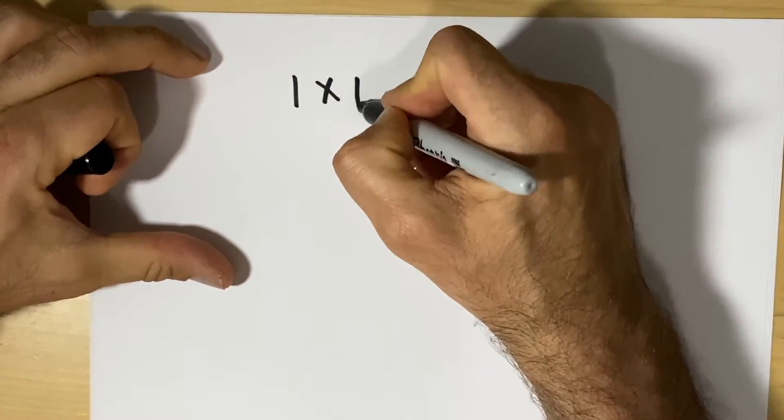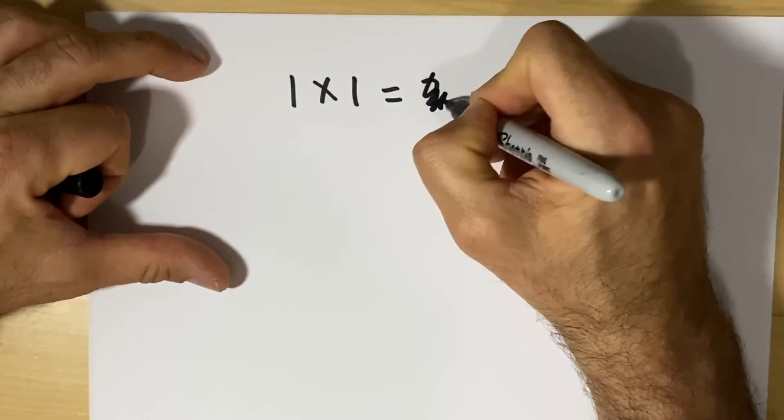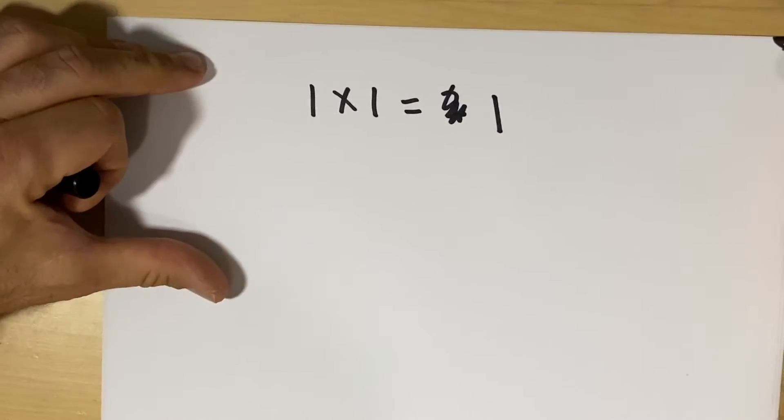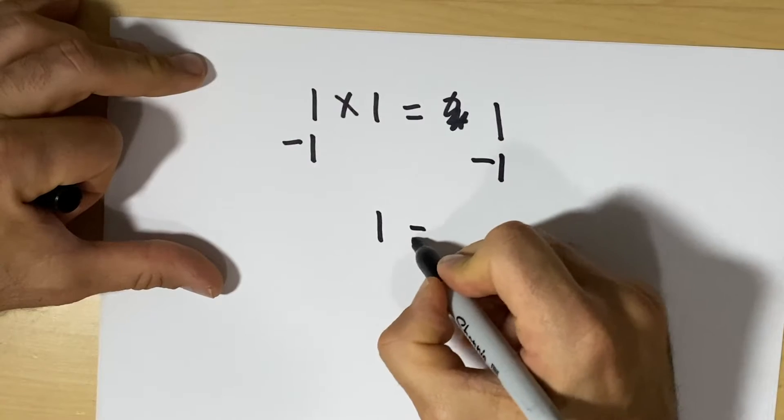Another thing Terrence Howard claims is that 1 times 1 equals 2. He says it can't equal 1, and one thing in his book he showed was because if I subtract 1 here and here, there's 1 left.